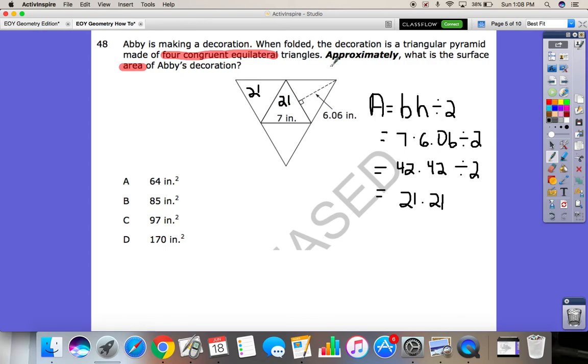It said approximately, so I'm just going to go ahead and round it to the nearest whole number. In this case, it'll round down to just 21. And if you add all four of those together, you end up with 84. The closest one to that is 85. Round it up a little bit, and that's okay. To do the surface area, find the area of each individual shape and add it up.